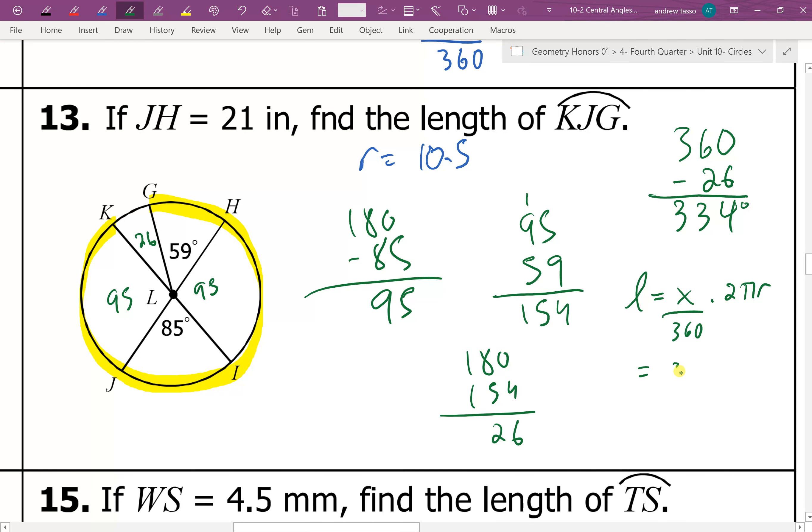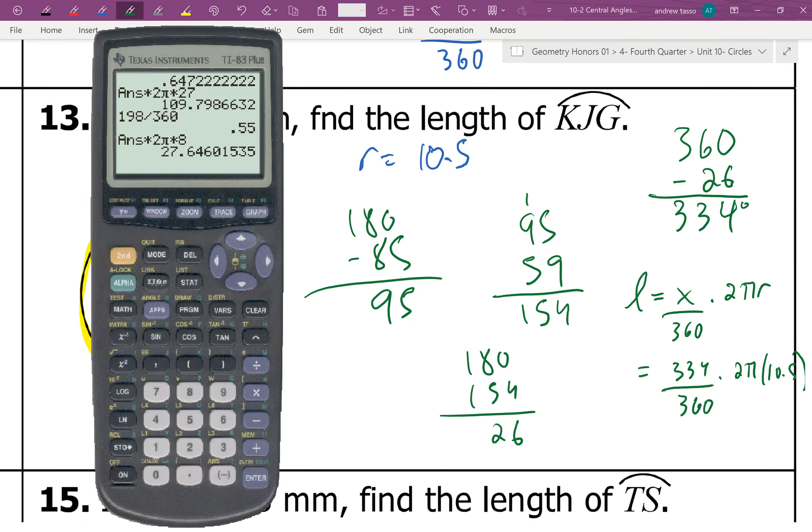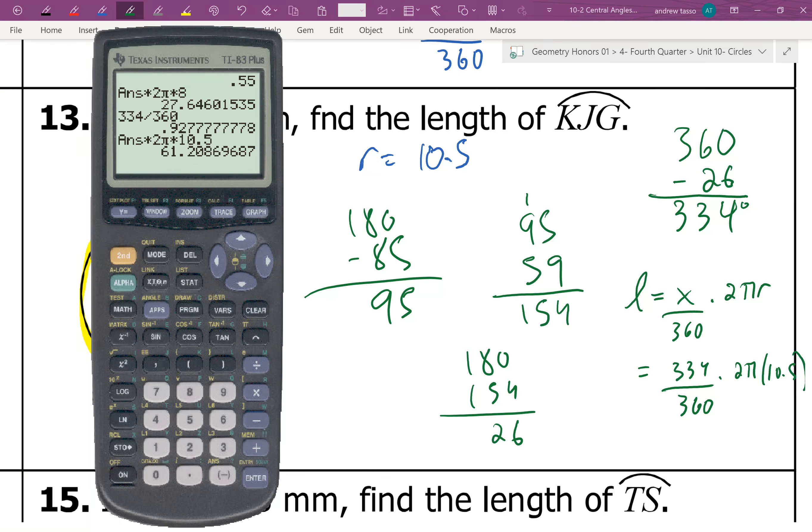The x would be 334 out of 360. And I times that by 2 pi, and then the radius of 10.5. So this all can go in the calculator. 334 divided by 360. We times this by 2 pi, and we times the answer there by 10.5. And you get 61.2.